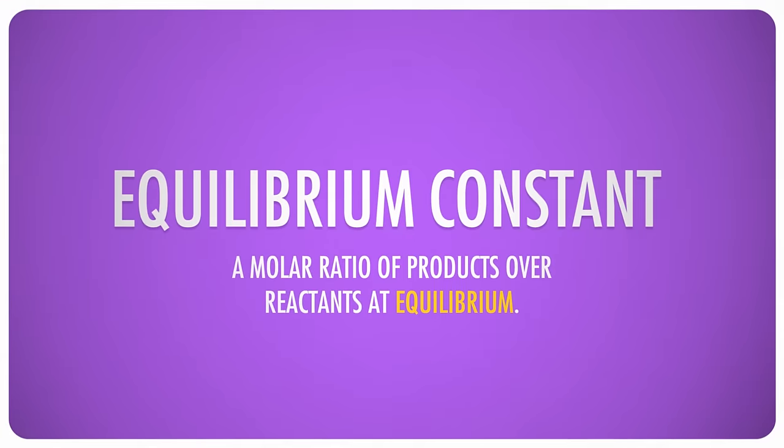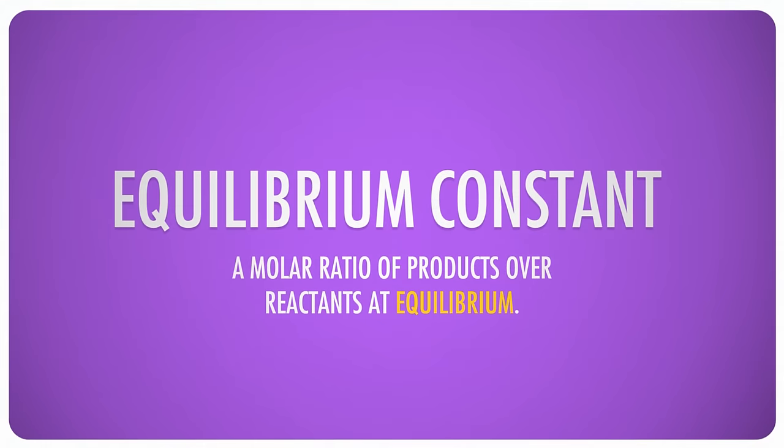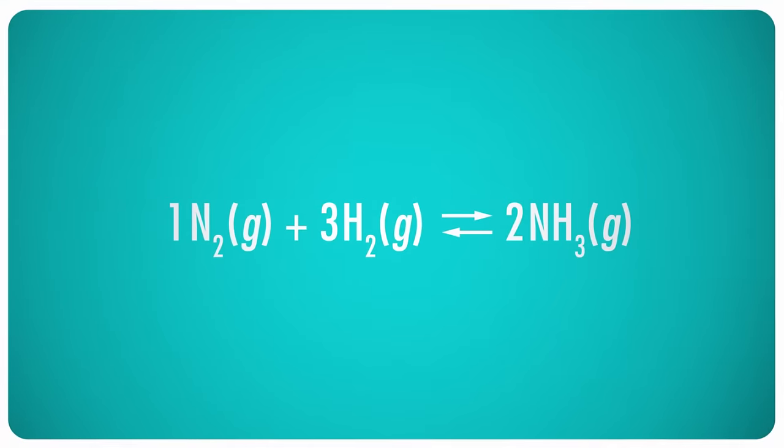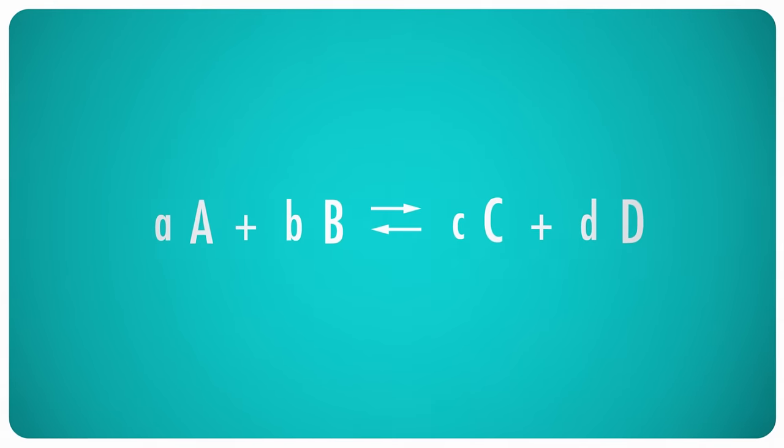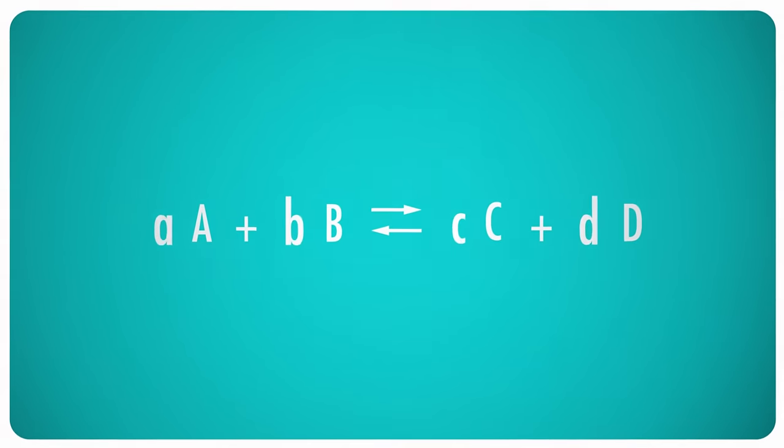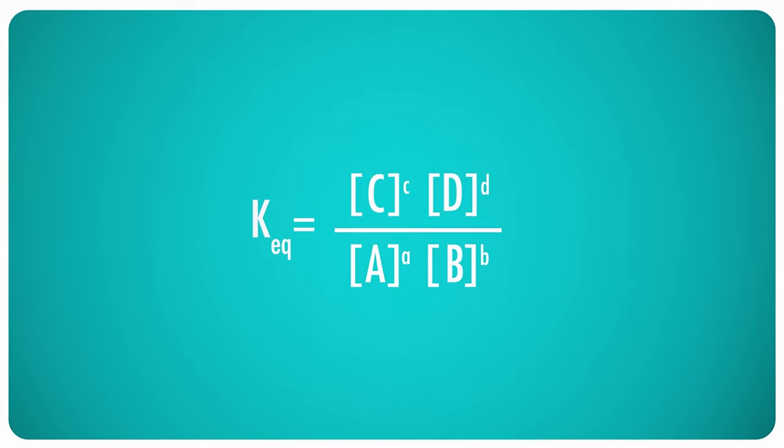The first and most important thing you need to do equilibrium calculations is the equilibrium constant. This number is unique for every reaction and represents a molar ratio of products over reactants when a reaction is at equilibrium. Equilibrium constants are easy to set up, but hard to explain. So let's start with an example using this obviously fake chemical equation. The capital letters stand for the reactants and products, and the lowercase letters stand for their coefficients. The equilibrium constant, or KEQ, is equal to the product of the molar concentration of the products divided by the product of the molar concentration of the reactants. Each concentration is raised to the power of its coefficient in the balanced equation.